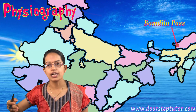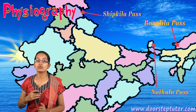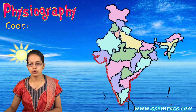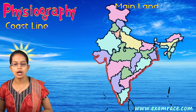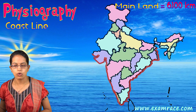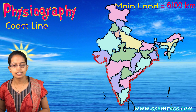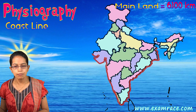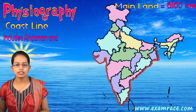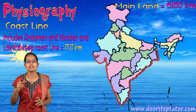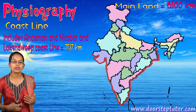India has numerous mountain passes connecting it to other countries — Bomdila Pass, Shipkila Pass, and Nathu La Pass are some of the major ones. Regarding the coastline, considering only the mainland, India has 6,100 kilometers of coastline running from Gujarat to West Bengal. Including the island territories of Andaman & Nicobar in the Bay of Bengal and Lakshadweep in the Arabian Sea, the total coastline extends to 7,517 kilometers.